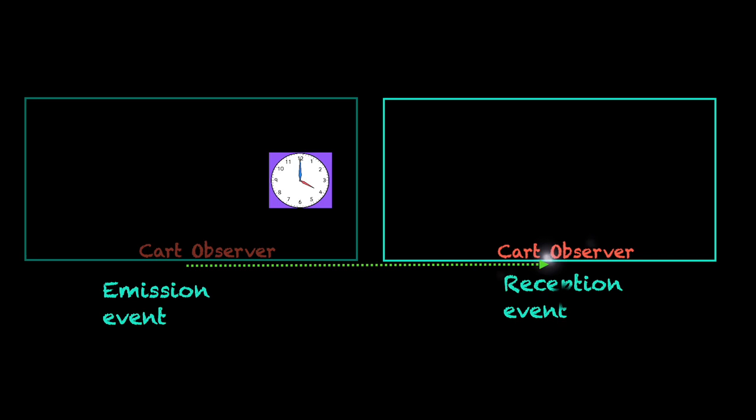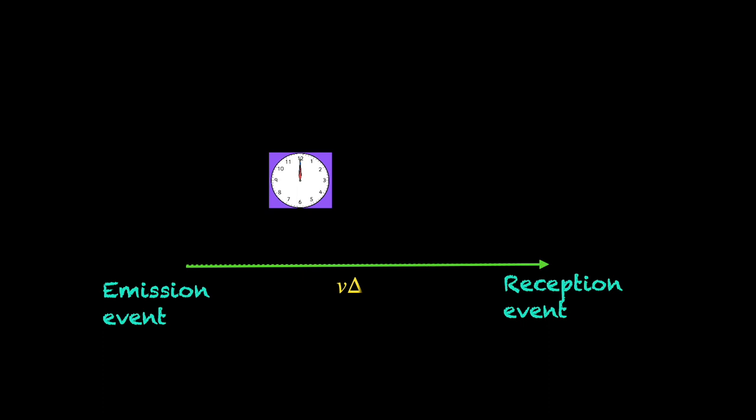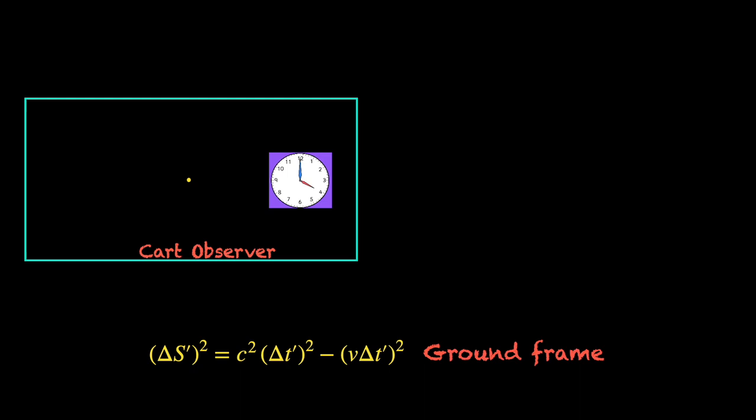The space-time interval of concern is in between the photon emission and reception events. According to the ground observer, after sending the photon, the cart observer moved with speed v for a time interval delta t prime covering a spatial distance v times delta t prime before receiving the photon pack. The space-time interval in the ground frame is thus c-squared times the time interval squared minus square of the spatial distance covered. In the cart frame, however, the observer sent and received the photon standing at the same spot. So, he covered no spatial distance at all as far as he is concerned. He only saw the cart clock ticking for a duration delta t between the events. So, in the cart frame, the space-time interval is just c-squared times delta t-squared.